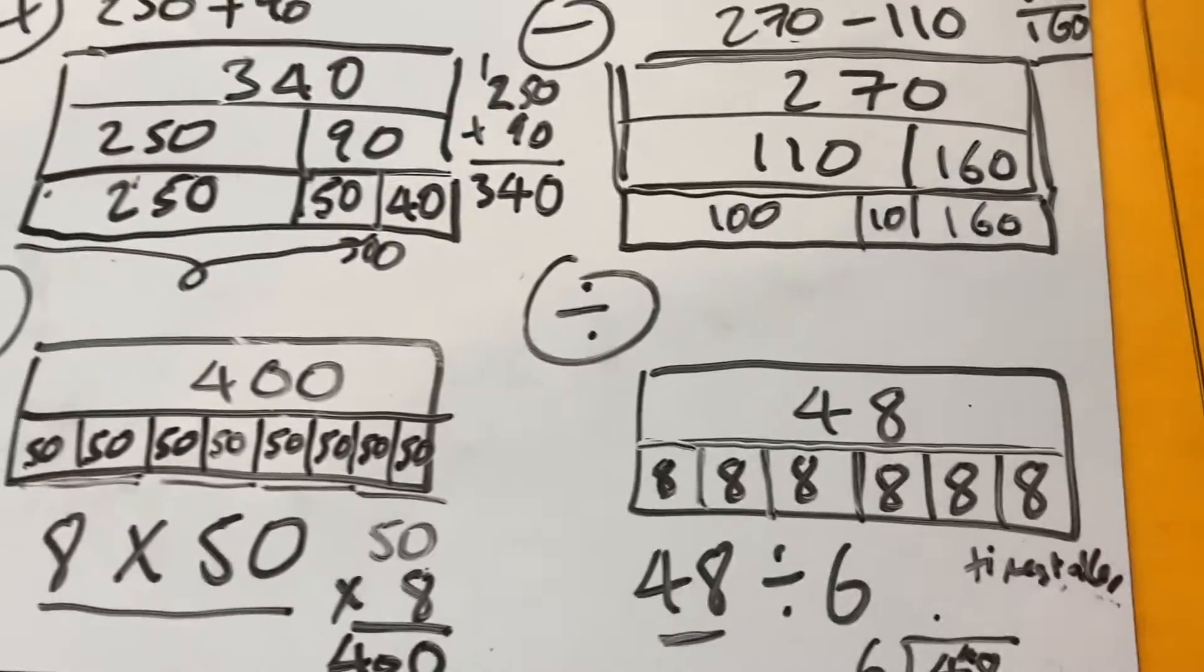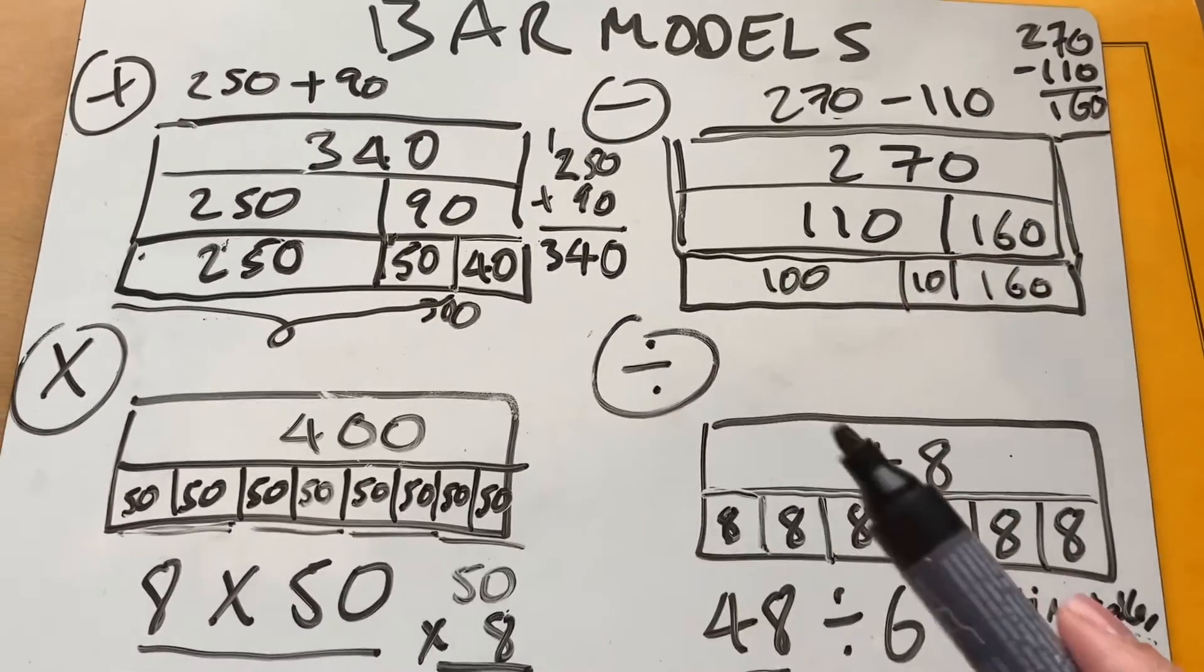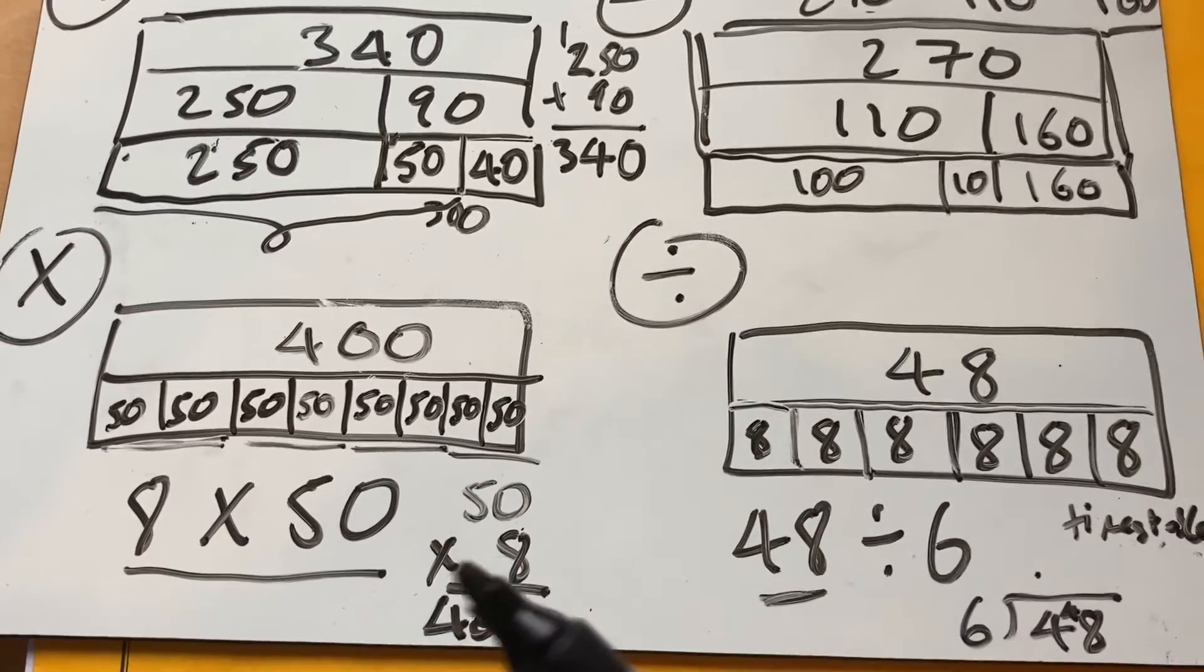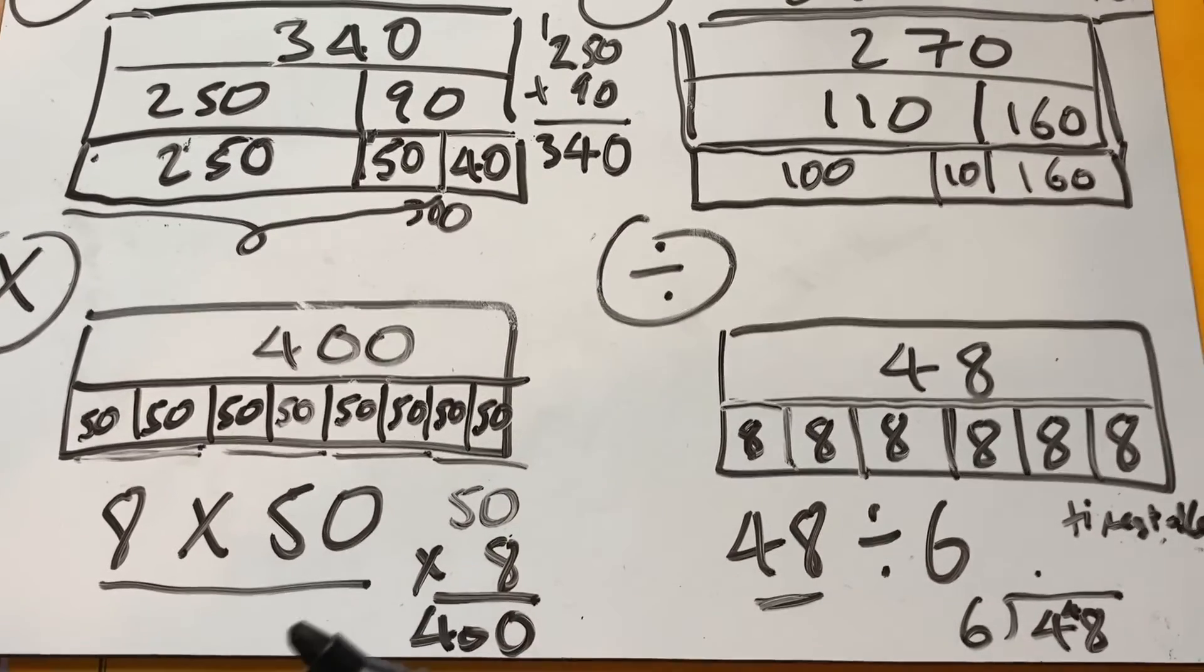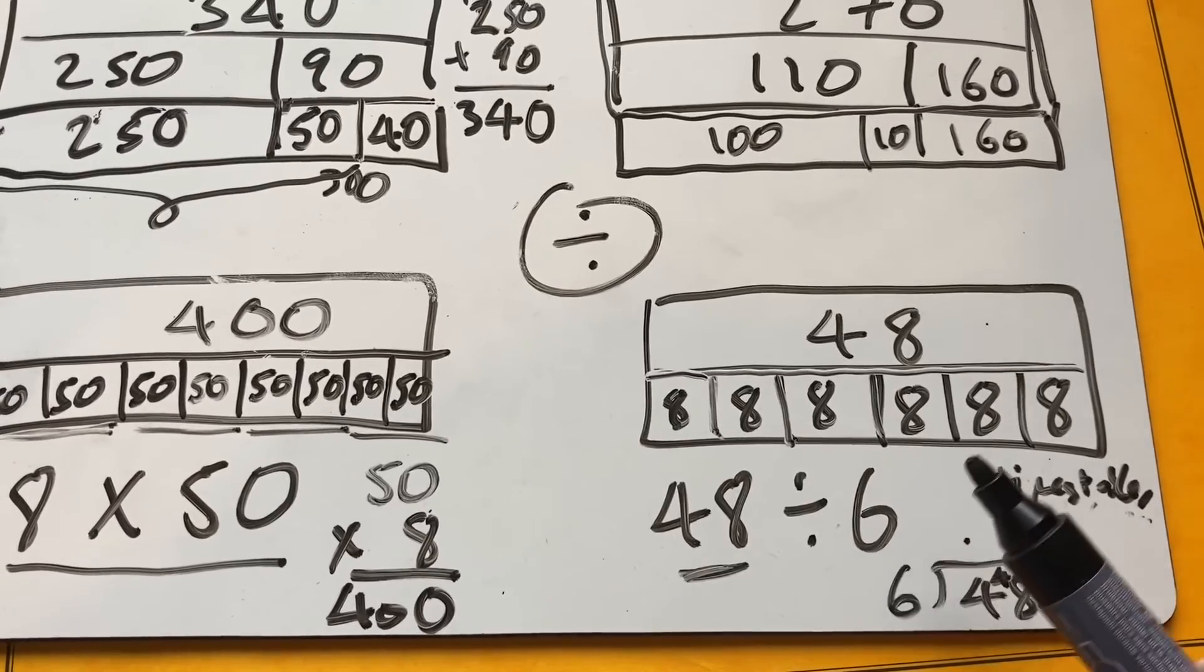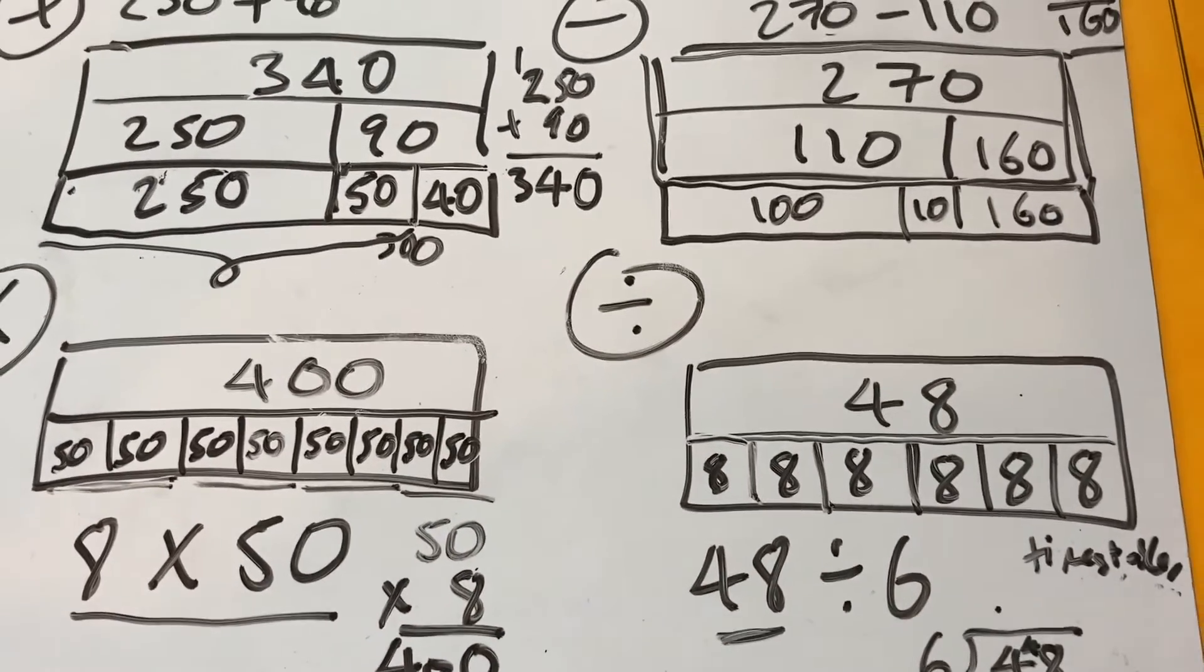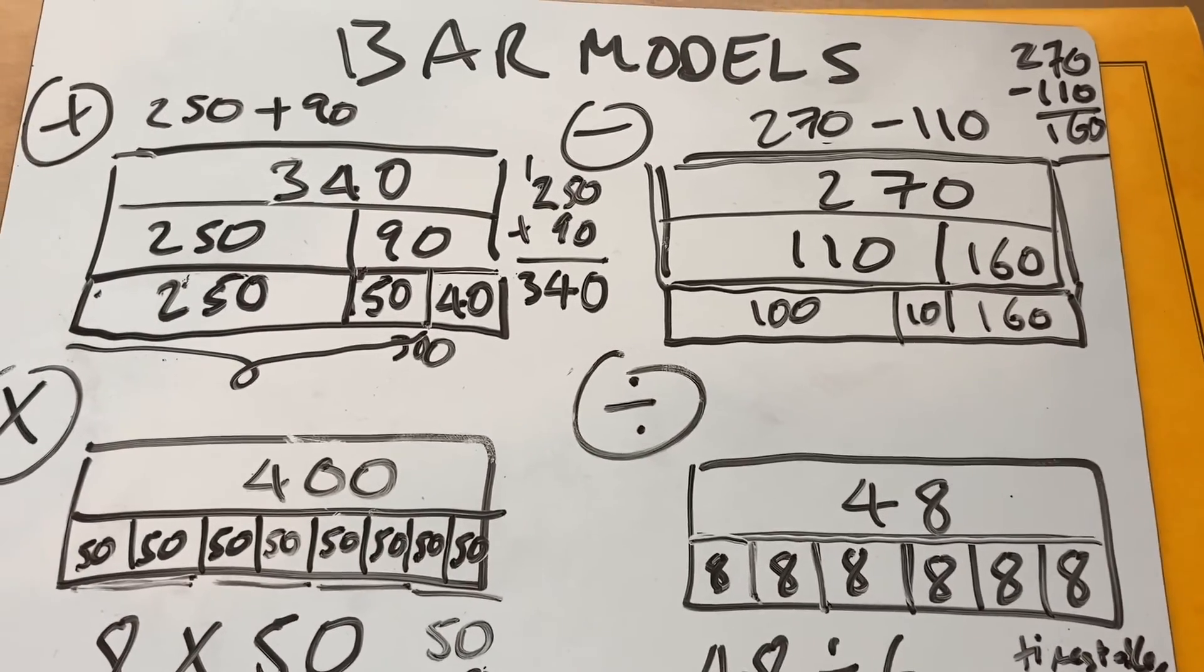So there we go. There's a bar model representation of adding, subtracting, multiplying, and dividing. As you can see, with multiplication and division, we're looking at factors. So the factors of 400, 8 and 50, the factors of 48, 8 and 6, the multiples of 6, the multiples of 8, and the multiples of 8 there again. So lots of maths that we can talk about there in bar models.